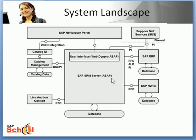This is the system landscape. In the middle is the SRM server, and then you have different components. Starting from here, this is your BW/BI where all the reporting is done. Through RFC, the data from the SRM server goes into BI, which has its own database and is used for reporting.